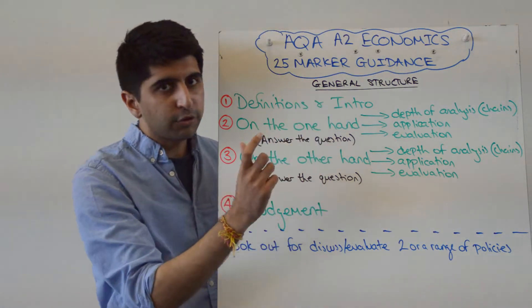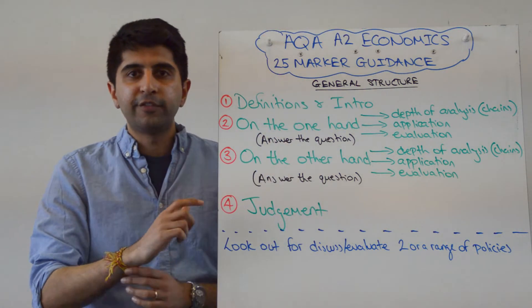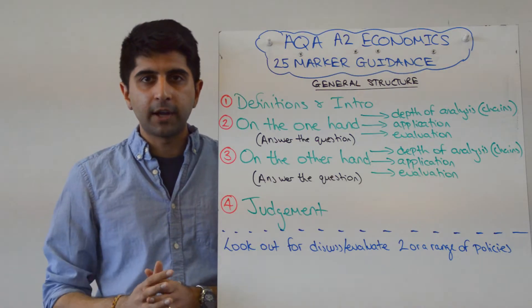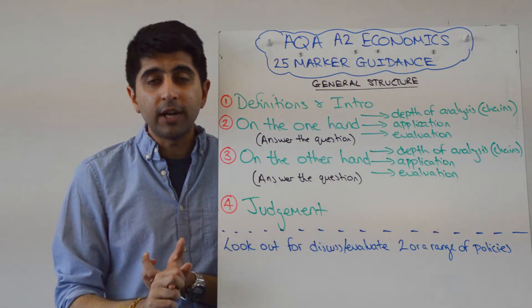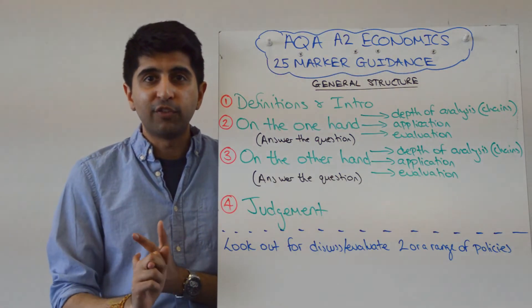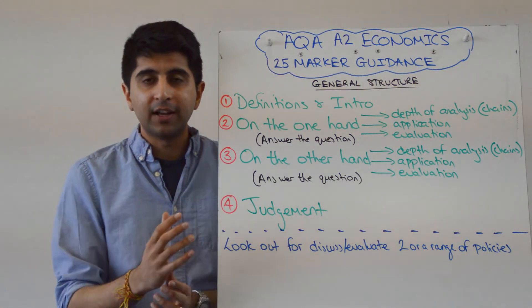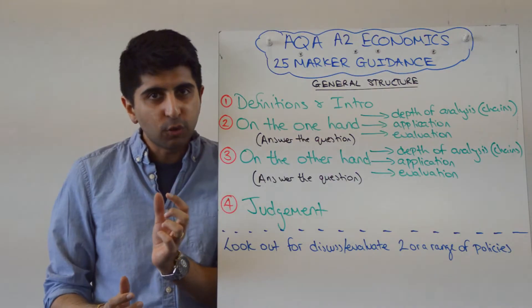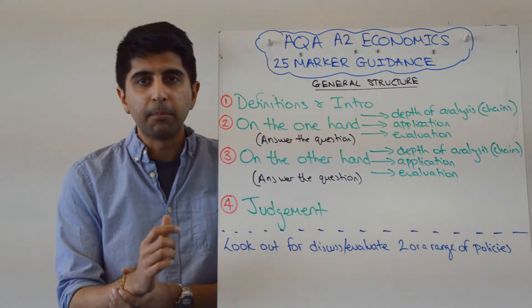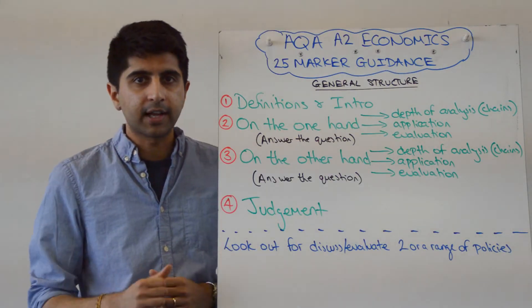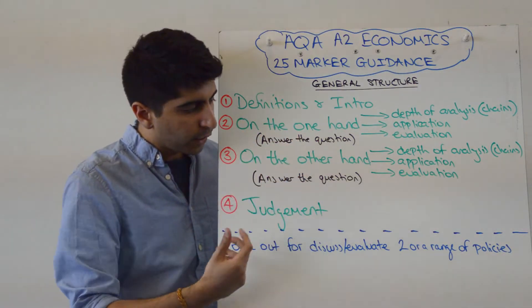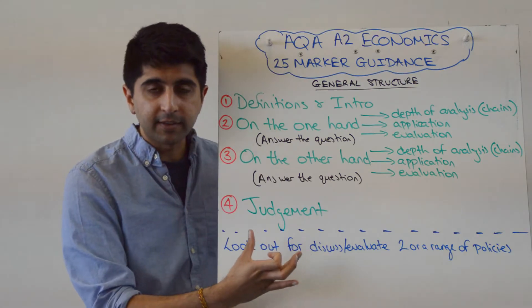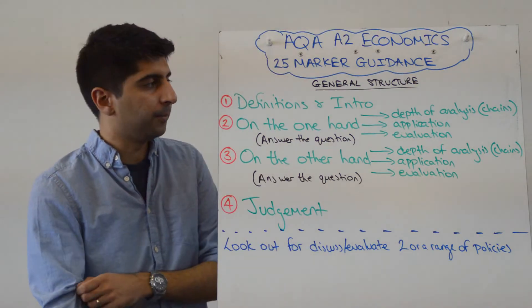This is my general structure for 25 mark questions, whether it's Econ 3 or Econ 4. This structure tends to work for most questions that come up. Let me go through it and then I'll go through a couple of exceptions down below.